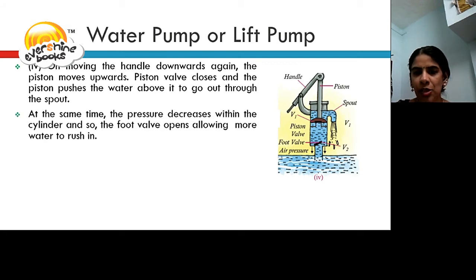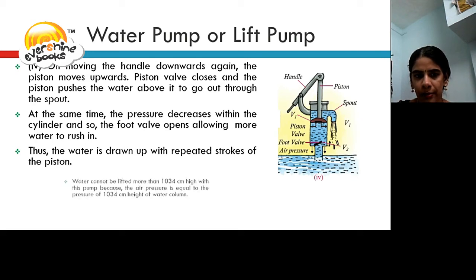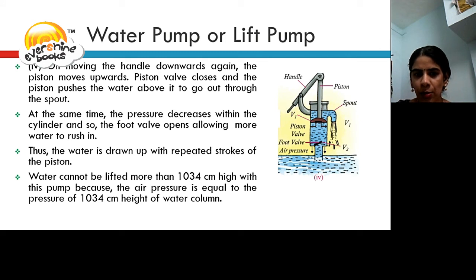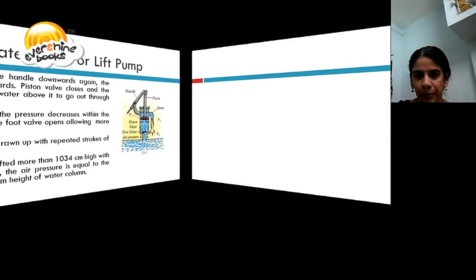At the same time, the pressure decreases within the cylinder and so the foot valve opens allowing more water to rush in. Thus, the water is drawn up with repeated strokes of the piston moving up and down. Water cannot be lifted more than 1034 cm high. This is because the air pressure is equal to the pressure of 1034 cm height of water column.